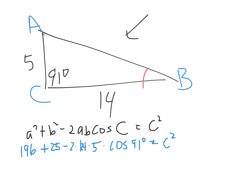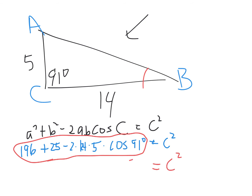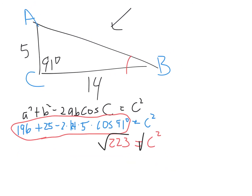Setting up: 14 squared plus 5 squared minus 2 times 14 times 5 times cosine of 91 equals c squared. That's 196 plus 25 minus 140 cosine(91). Saren got 223 — verified. Take the square root of 223, and Oscar got approximately 14.95. So this side is 14.95.